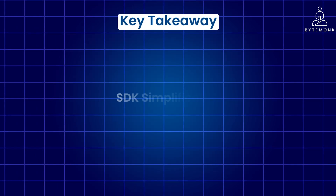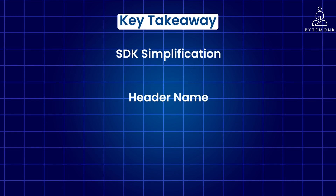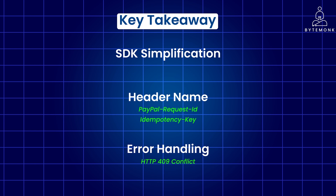The key takeaway is that the SDK abstracts the low-level details of API communication, making it easier to include idempotency keys. PayPal uses the PayPal-Request-ID header for idempotency keys, but other APIs may use different header names — for example, just 'idempotency-key'. Remember to handle potential errors such as duplicate key errors, which can be handled using HTTP 409 Conflict, to gracefully manage retries or inform the user.